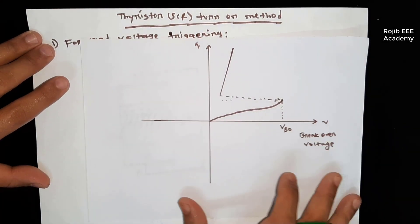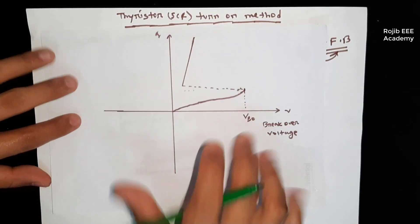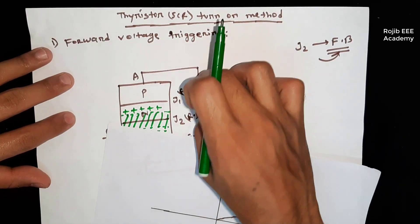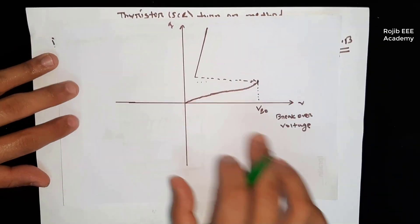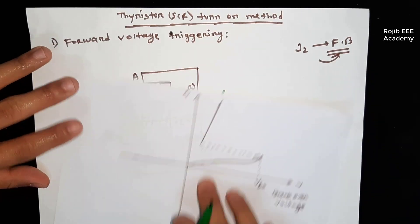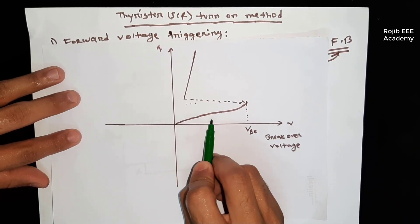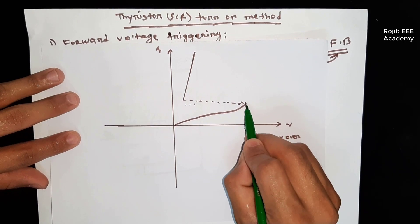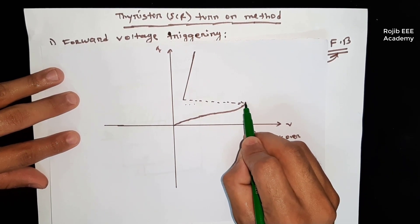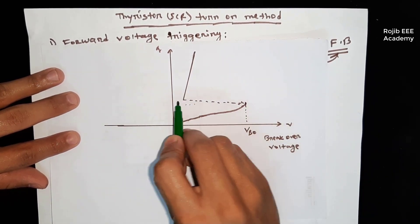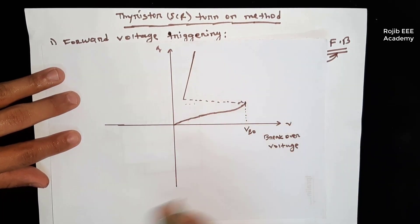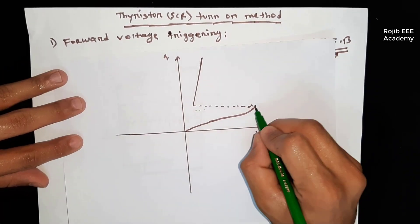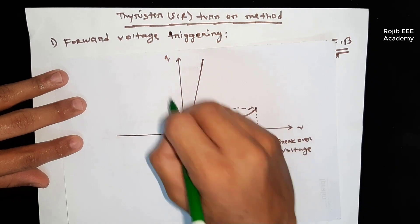When we look at the V-I characteristics, we use a forward voltage. As the forward voltage increases, we reach the breakover voltage. Forward voltage remains until the breakover voltage, at which point the device goes into the on-state.